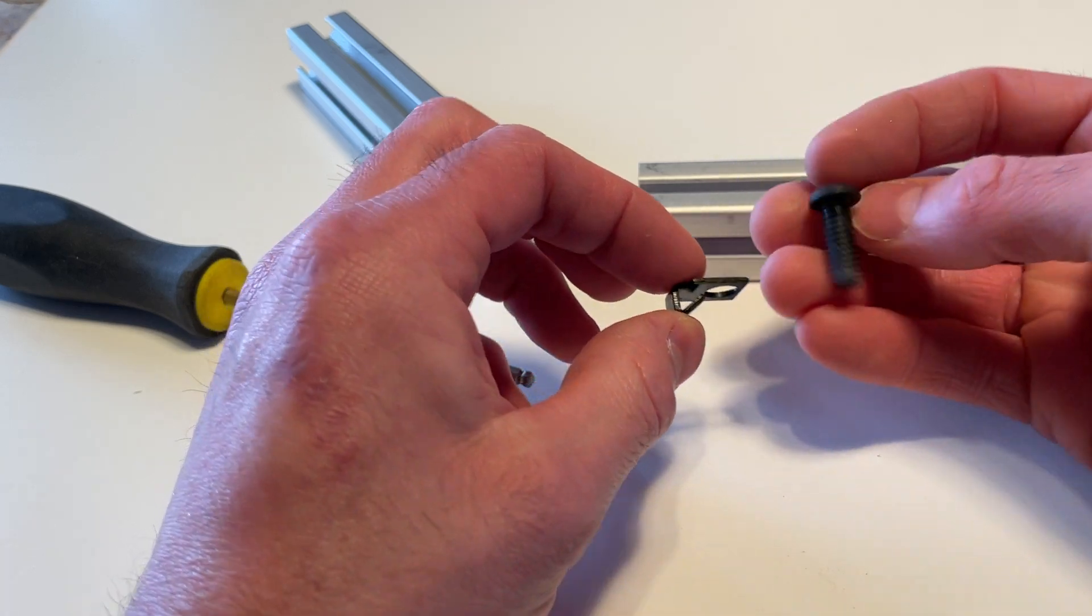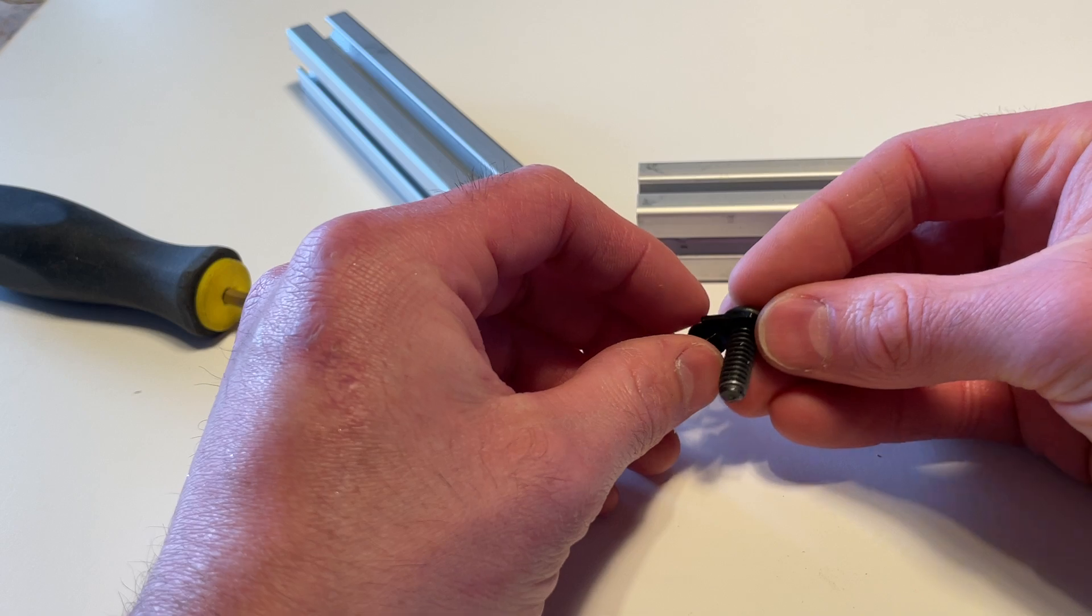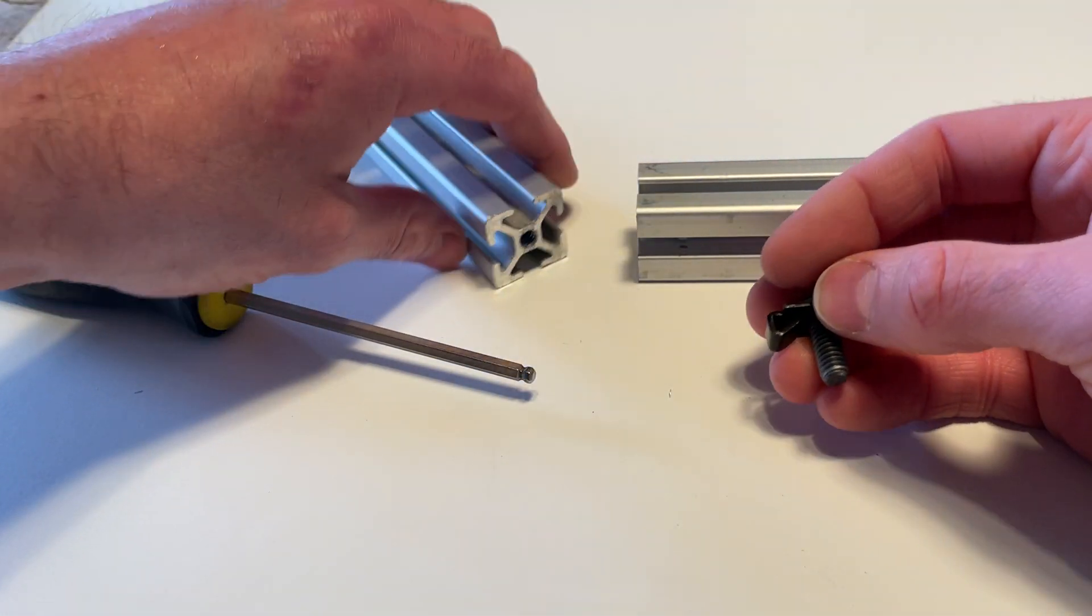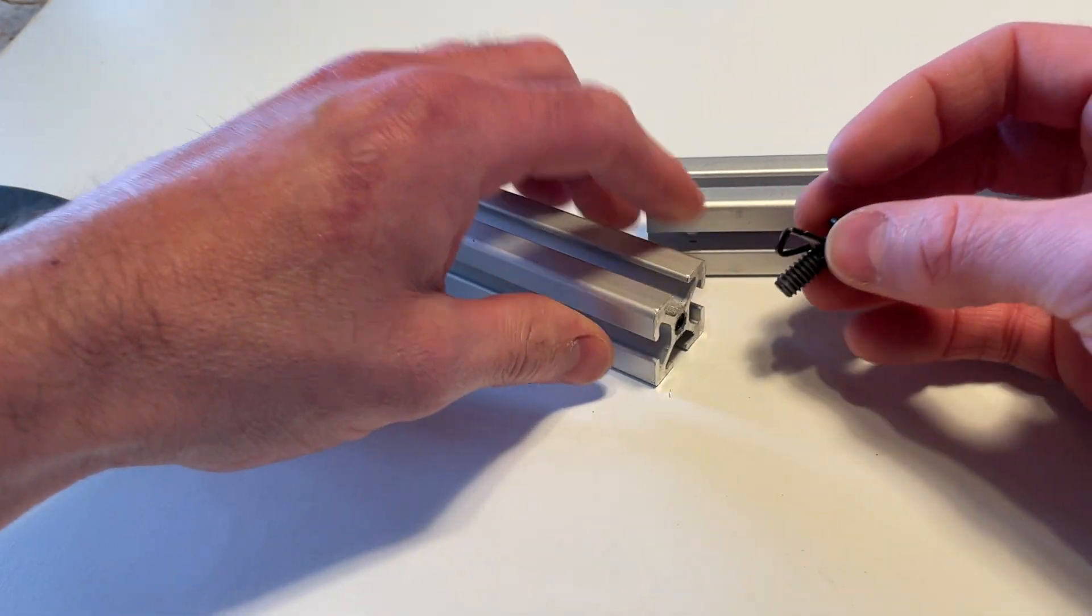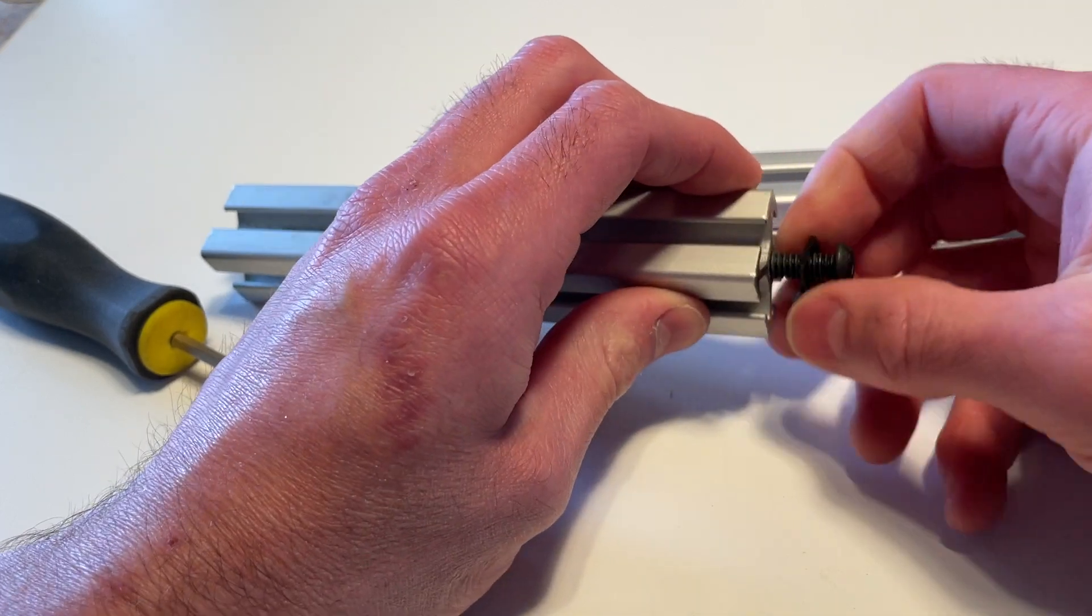To assemble it, drop the screw through the top so the tab is pointing down. To install, my preferred method is to hand thread it into the threaded end of the extruded aluminum.